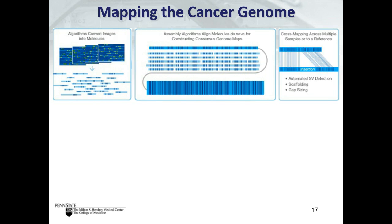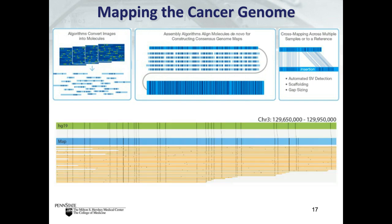Once the cancer genome is assembled de novo, it is compared to a reference genome to detect insertions, deletions, inversions, translocations, and other variants. An example of real data shows orange DNA molecule lines with tick marks indicating label positions, aligning to generate a map in blue that is compared to the reference genome. In this case, the set of molecules maps precisely to chromosome 3.